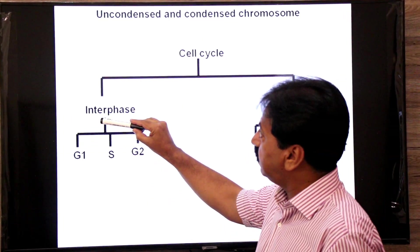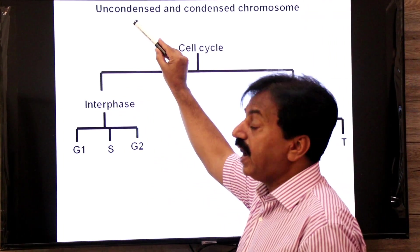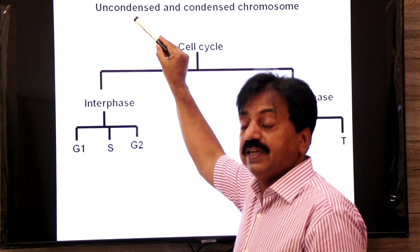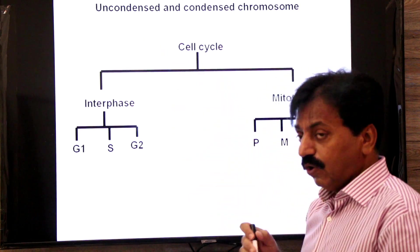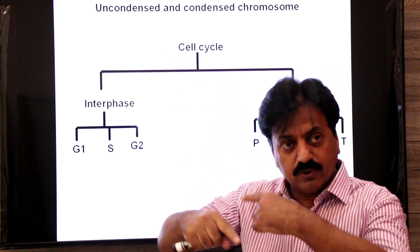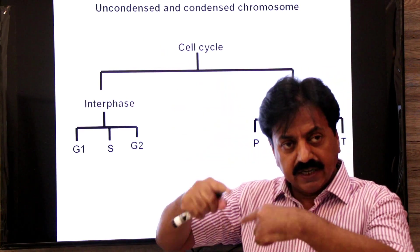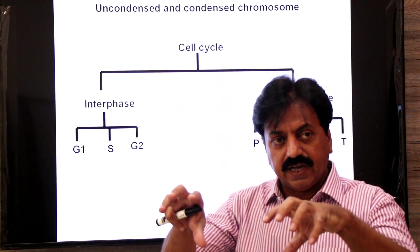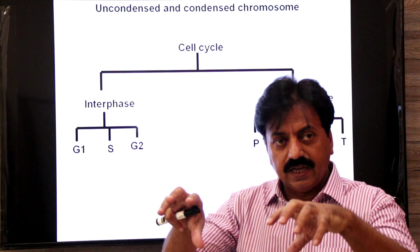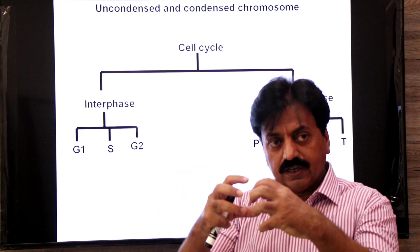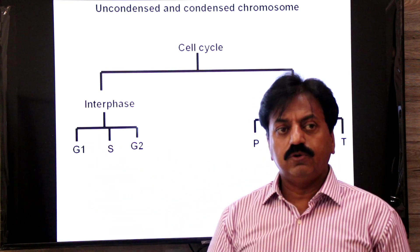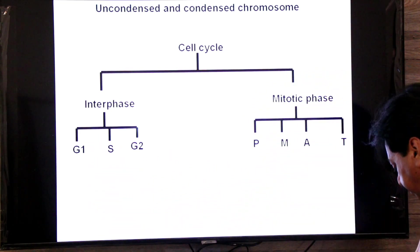Yaad rakhiyega: interphase mein uncondensed chromosome ko chromatin network kehte hain. Aur jab wo packaged hokar ek khas unit banate hain nucleosome ke, toh wo shorter bhi ho jaate hain aur unko kehte hain condensed chromosomes.